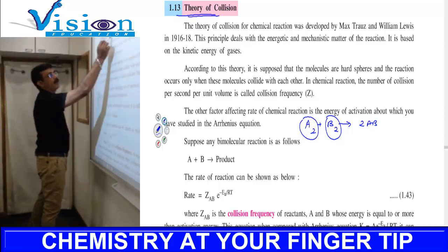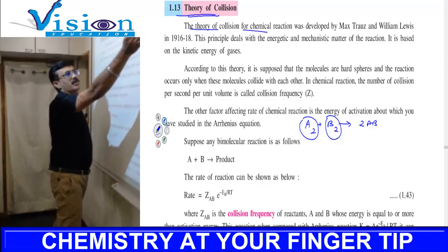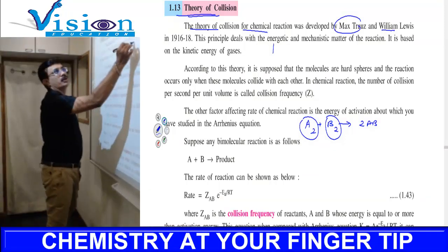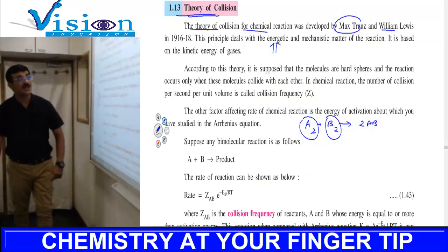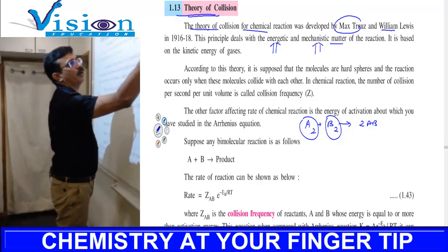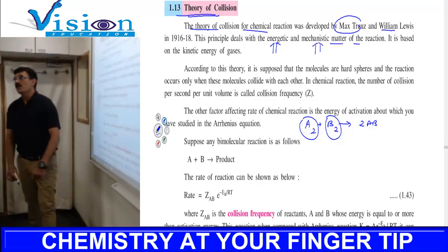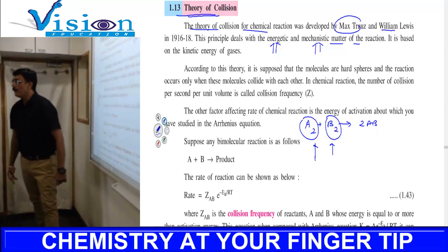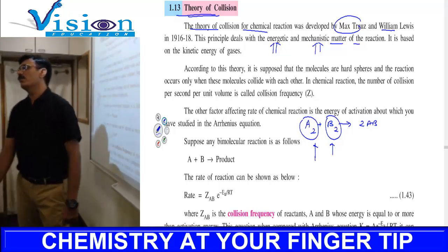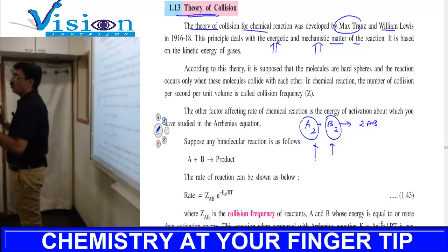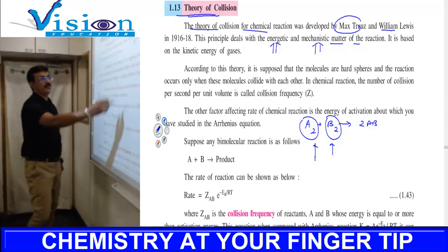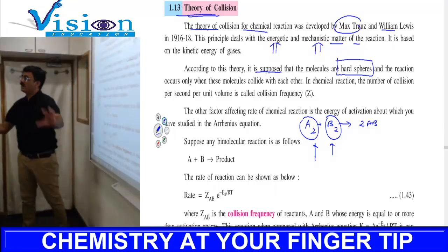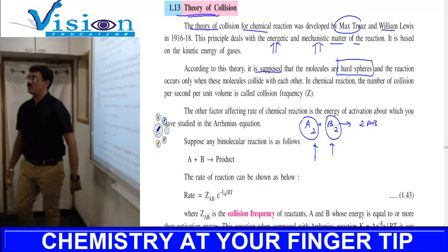The theory of collision for chemical reactions was developed by Max Trautz and William Lewis. This principle deals with two important aspects: energetic and mechanistic matter of the reaction. When collision happens between two molecules, the mechanistic part considers them as hard spheres. When collision takes place, there is a change of energy.